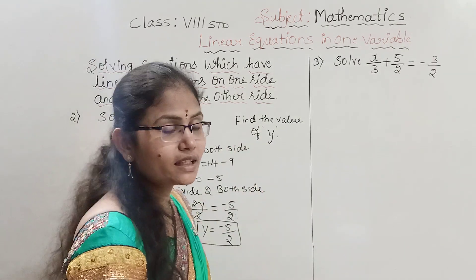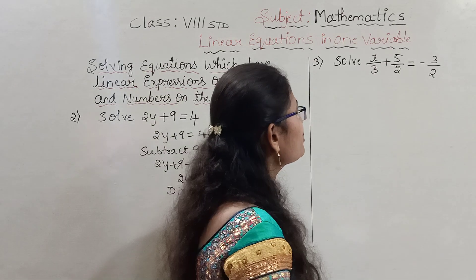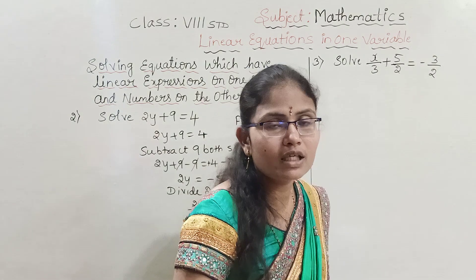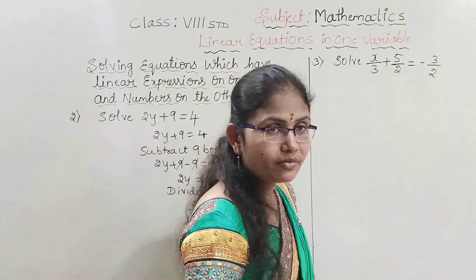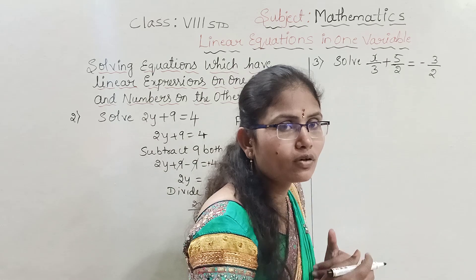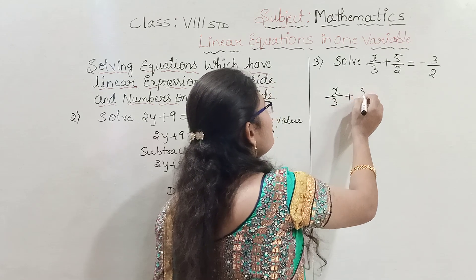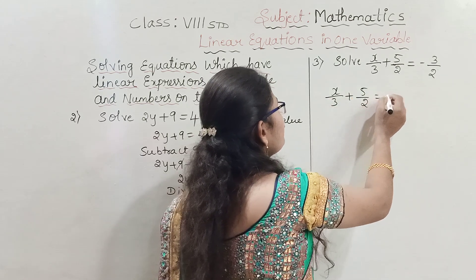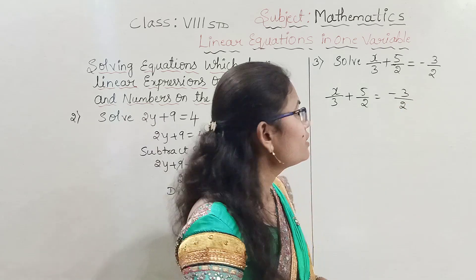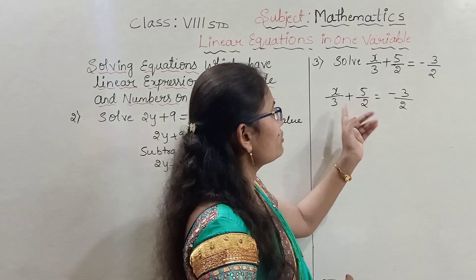In the same way, let us consider the third problem. Solve x by 3 plus 5 by 2 equals minus 3 by 2. Here they have given fractional numbers. We need to find the value of x. We take the LHS: x by 3 plus 5 by 2 equals minus 3 by 2. We have to eliminate the term 5 by 2.